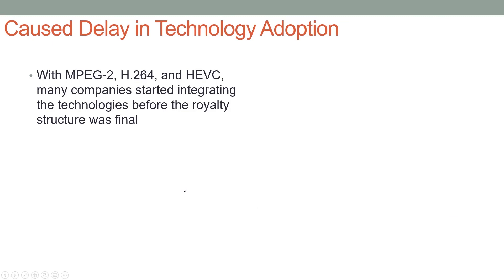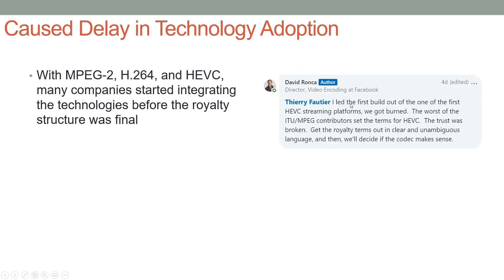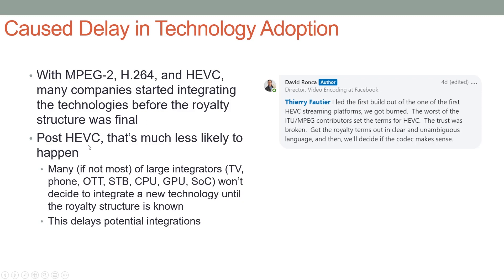With MPEG-2, H.264, and HEVC, many companies started integrating the technologies before the royalty structure was final. This is from a LinkedIn conversation from David Ronka, who was at Netflix at the time and is now director of video encoding at Facebook. He basically said, talking to someone from the MCIF, that they got burned when they adopted HEVC too early because of the licensing policies. Post-HEVC, many if not most large integrators — TV, phone vendors, OTT, STB, CPU, GPU, and system-on-chip vendors — won't decide to integrate a new technology until the royalty structure is known, and that's going to delay potential integrations because royalty policies can take up to four and a half years after the spec is finalized.